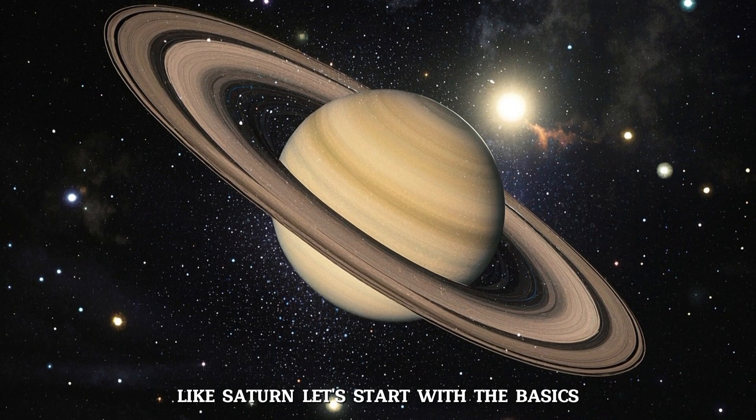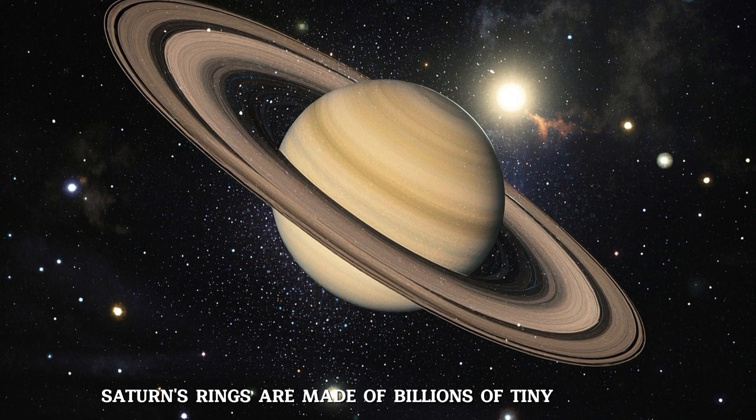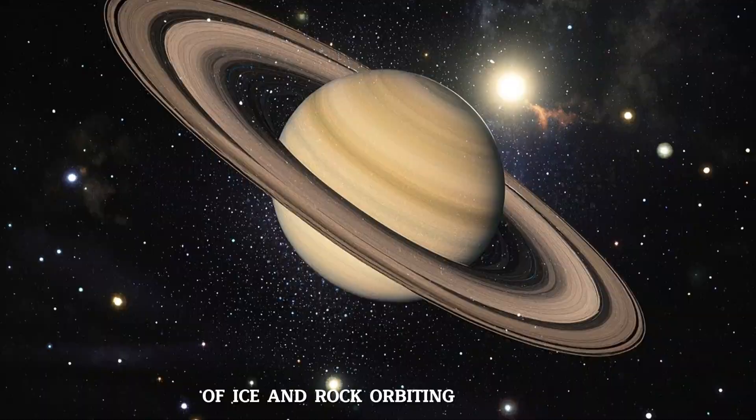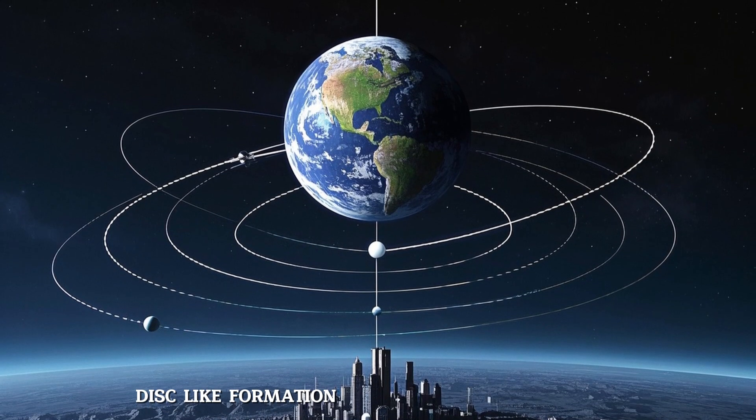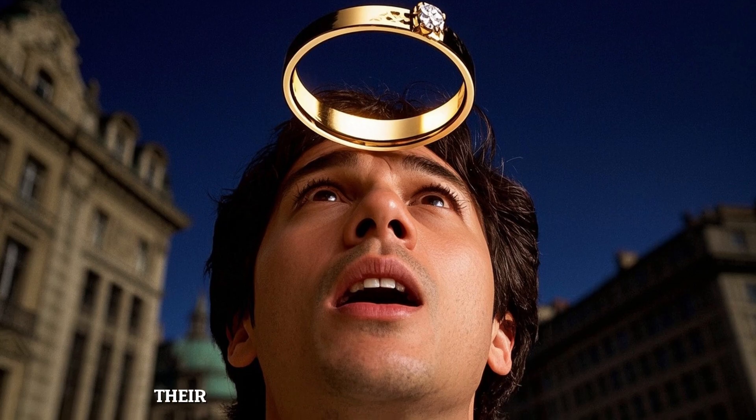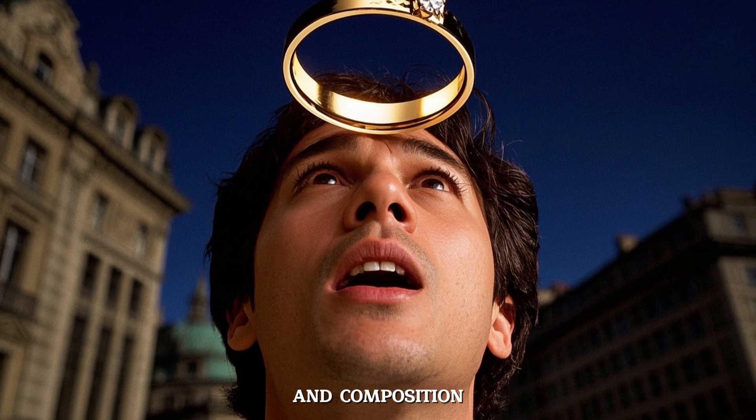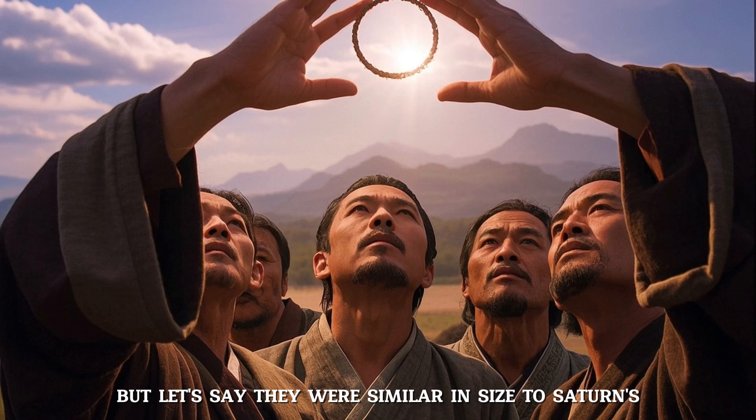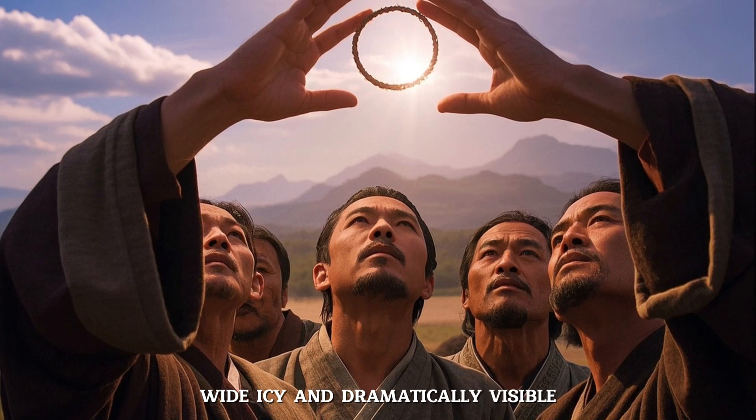Let's start with the basics. Saturn's rings are made of billions of tiny particles of ice and rock, orbiting in a flat, disk-like formation. If Earth had similar rings, their structure would depend on the mass and composition, but let's say they were similar in size to Saturn's, wide, icy, and dramatically visible.